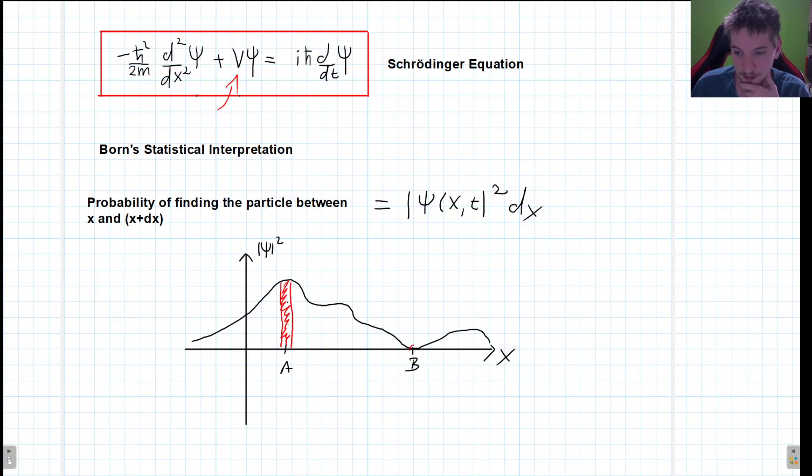And if we do this experiment, there's a pretty small probability of finding it in the vicinity of point B. That is what this Born statistical interpretation is going to be telling us.